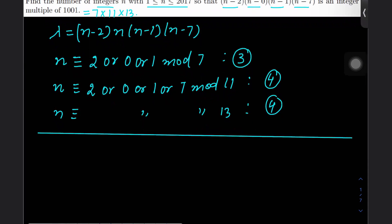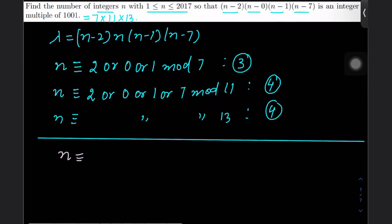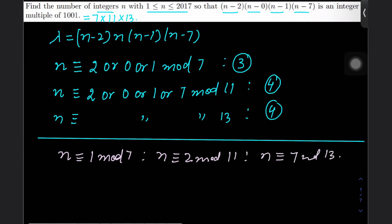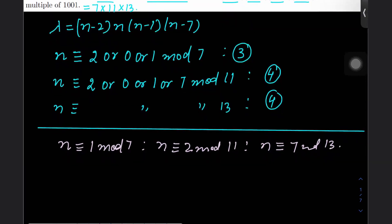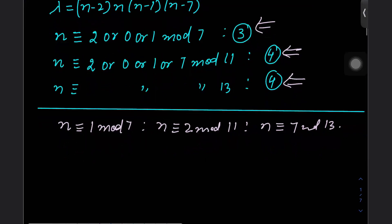To find values of n, we set up a system of congruences. For example, n ≡ 1 (mod 7), n ≡ 2 (mod 11), and n ≡ 7 (mod 13). Each such system gives one value of n. We need to count how many such systems are possible: 3 choices mod 7, 4 choices mod 11, and 4 choices mod 13.